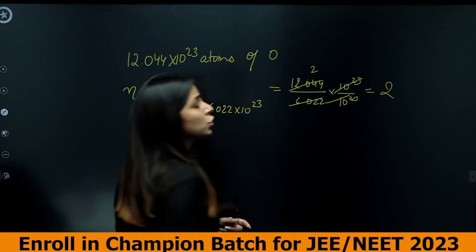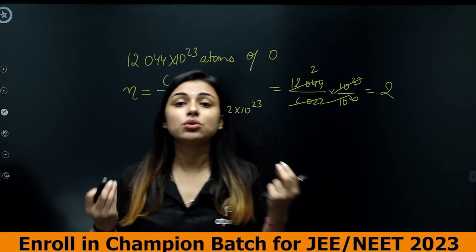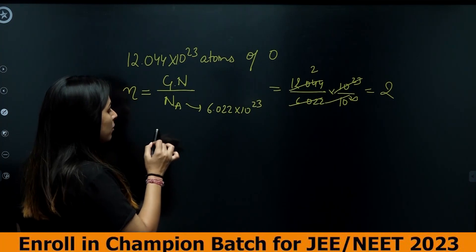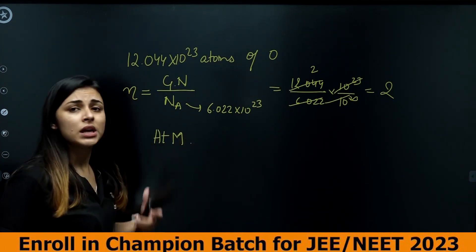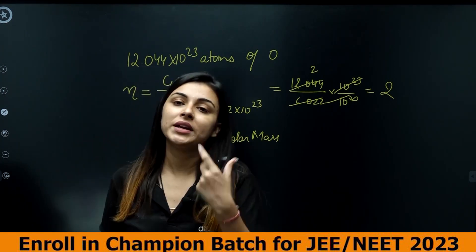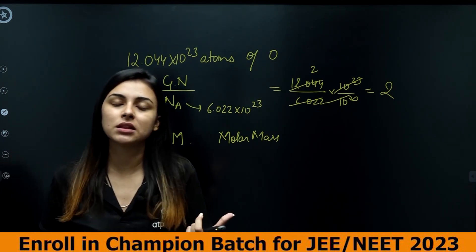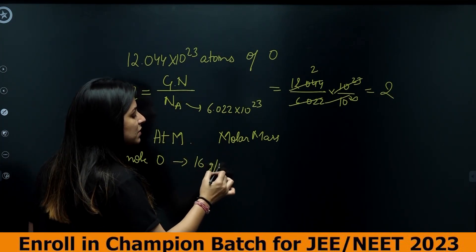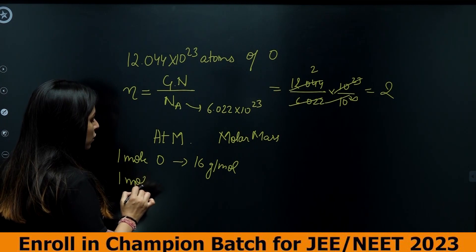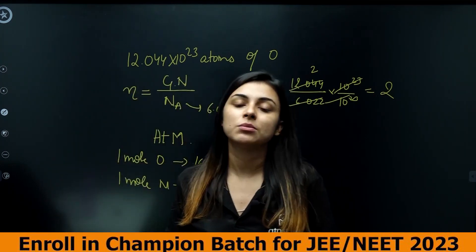We know that molar mass is the mass of one mole. For example, one mole of oxygen has a molar mass of 16 grams per mole. Similarly, one mole of nitrogen has a molar mass of 14 grams per mole.